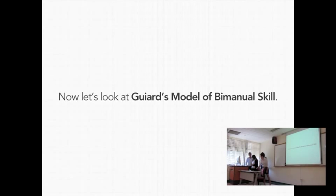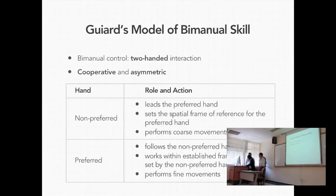Guiard's model of bimanual skills. Bimanual control simply means two-handed interaction, and Guiard has discovered that most of our daily tasks are asymmetric when he's researching about the bimanual skills. So he also discovered that both of our hands are actually cooperating when performing a task. So the following table actually summarized his model. So it categorized our hand into non-preferred hand and preferred hand. In the case, if a user is a right-handed user, his right hand will be his preferred hand and left hand will be non-preferred hand. So the role and action of a non-preferred hand is to lead the preferred hand and set a spatial frame of reference for the preferred hand to work on. He also performed coarse and rough. And for the preferred hand, he follows the non-preferred hand, works within the frame of reference and also performs fine movement.